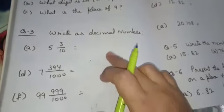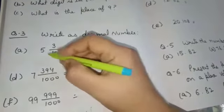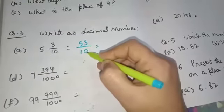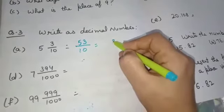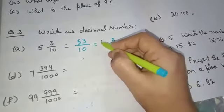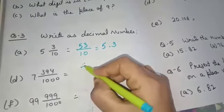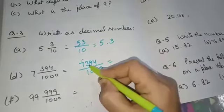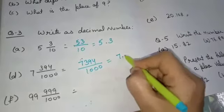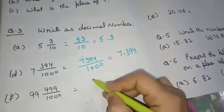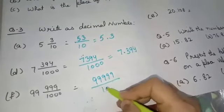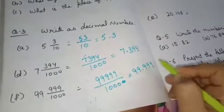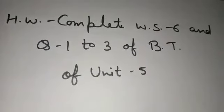Question number 3: write as a decimal number. We have already discussed such questions in our worksheet. A mixed number is converted to an improper fraction: 53 by 10. There is one zero, so the decimal point is placed leaving one digit from the right — the answer is 5.3. Similarly, 7000 + 394 gives 7394 by 1000 — leaving three digits gives 7.394. Another example: 9999 by 100 gives 99.99. Remaining parts you will do on your own.